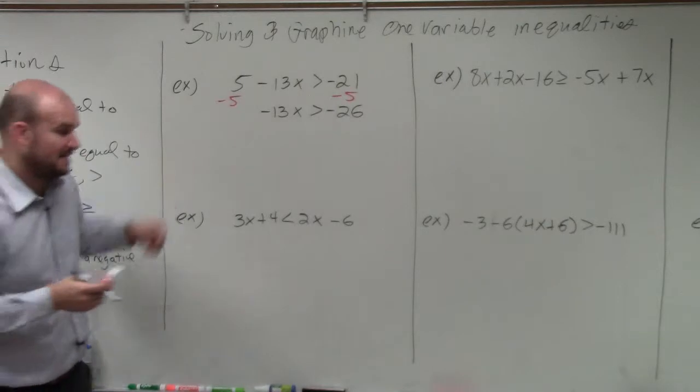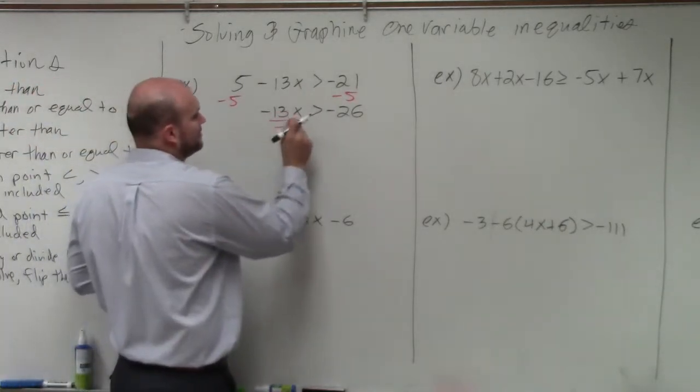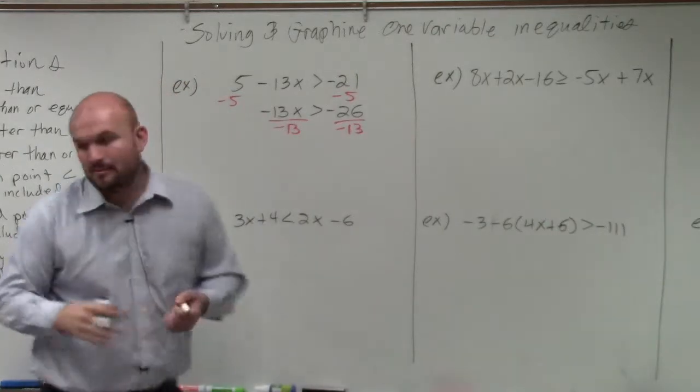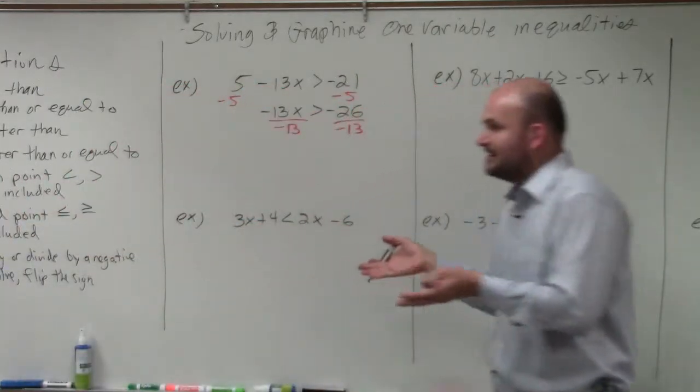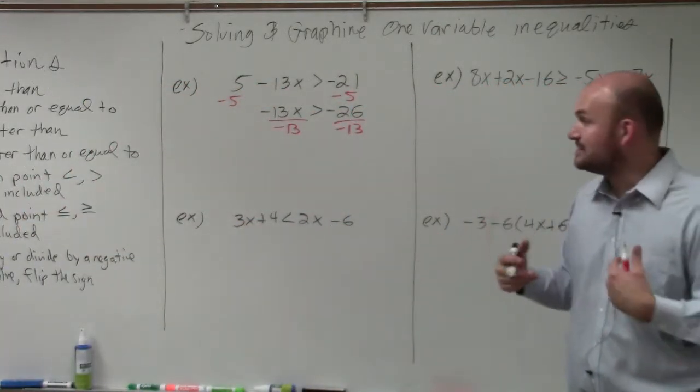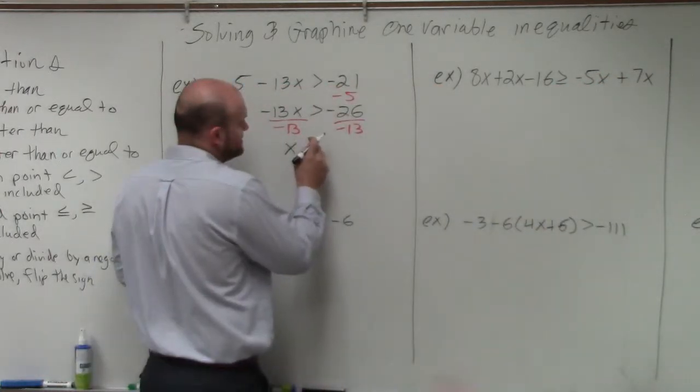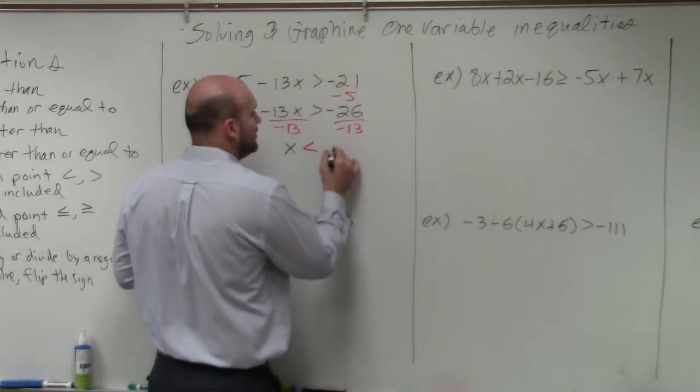Now my x is being multiplied by negative 13. So to undo that, I'll divide by negative 13. But remember my rule: whenever you multiply or divide by a negative number to solve, you have to flip the sign. So this is now less than, giving us x less than positive 2.